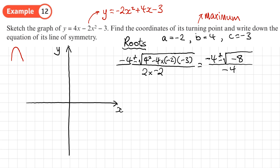We get a negative value of -8 under the square root, which is a problem. In standard maths we cannot find the square root of a negative number, so there are no real roots. This means the quadratic does not cross the x-axis at all.